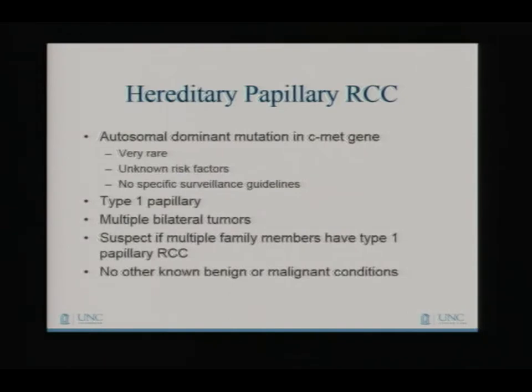The last of the big four is hereditary papillary renal cell carcinoma. These things are extraordinarily rare, and my take-home message is that the majority of kidney cancers are sporadic and don't come from an inherited mutation. I think I might have one patient in my clinic right now who carries this particular genetic mutation. It's associated with multiple tumors on both kidneys — and really, just the kidney cancer, nothing else.